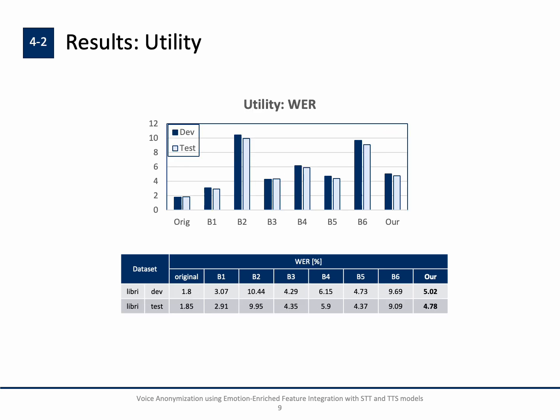The second evaluation metric is the speech recognition metric, word error rate — here, a lower score is better. As we move through the baselines from B1 to B6, the word error rate increases significantly for most models. Our model performs better than most of the baselines, and while it does not achieve the best performance, it demonstrates better utility results than three out of the six baselines, showing a competitive level of utility compared to other approaches.